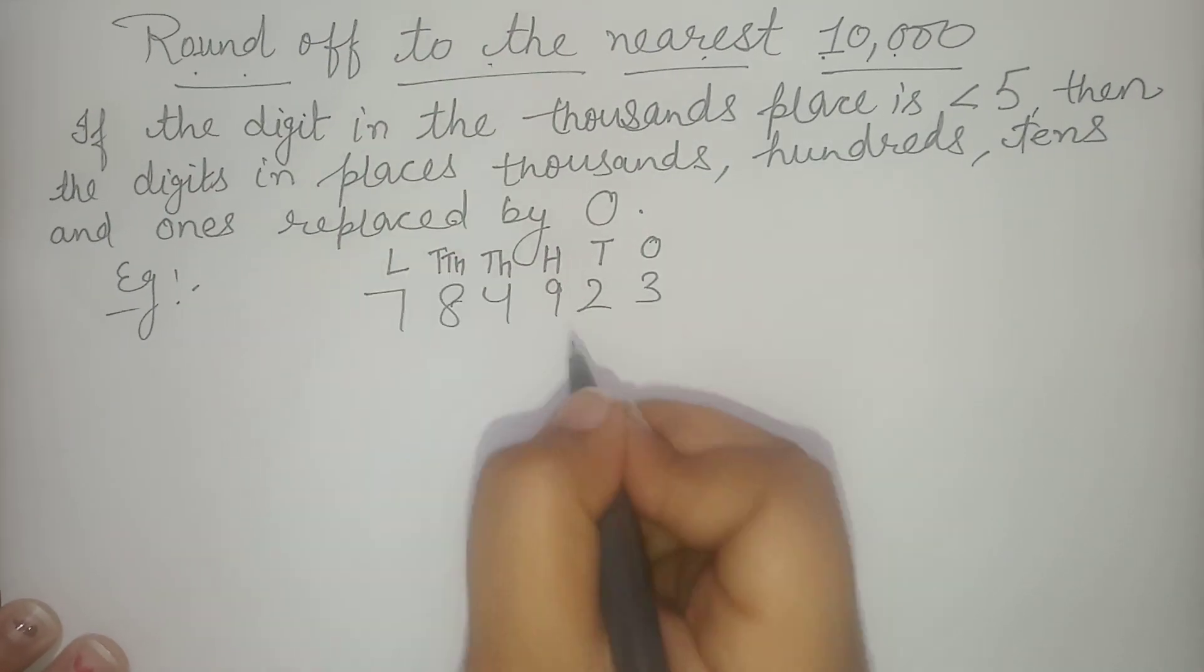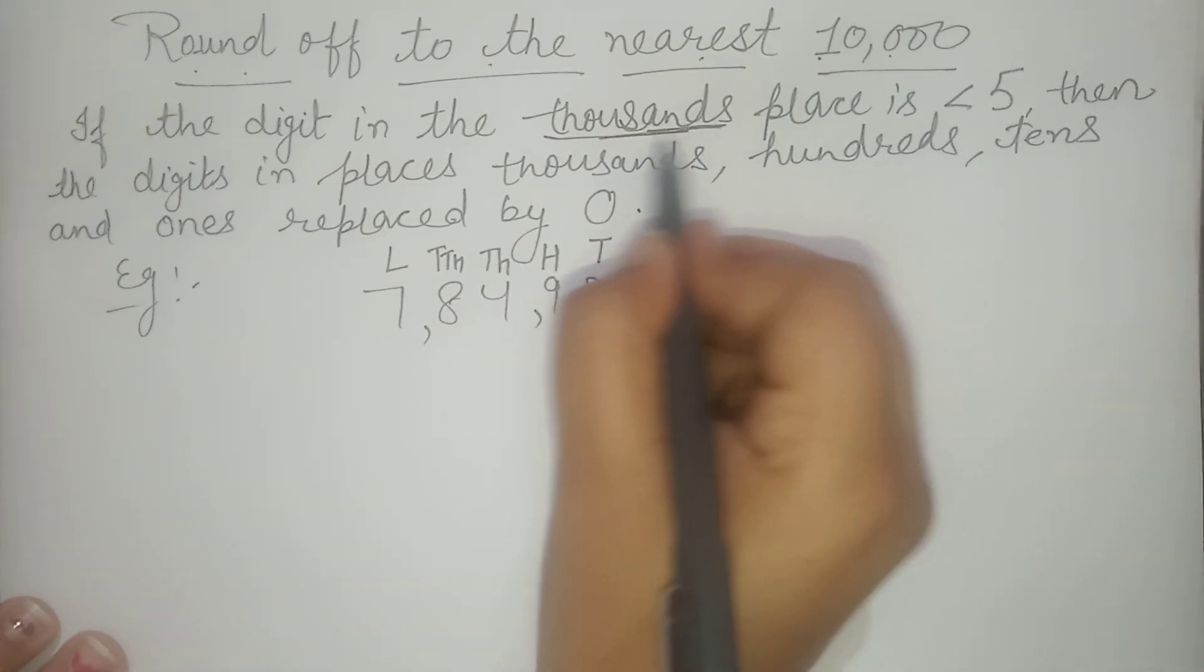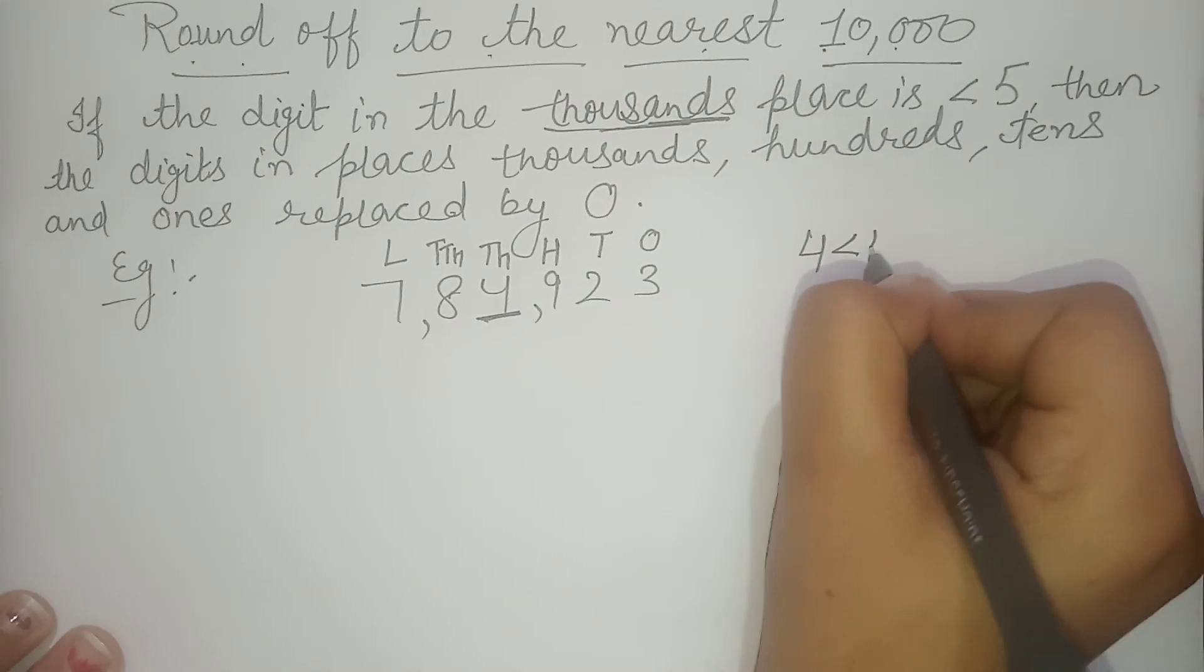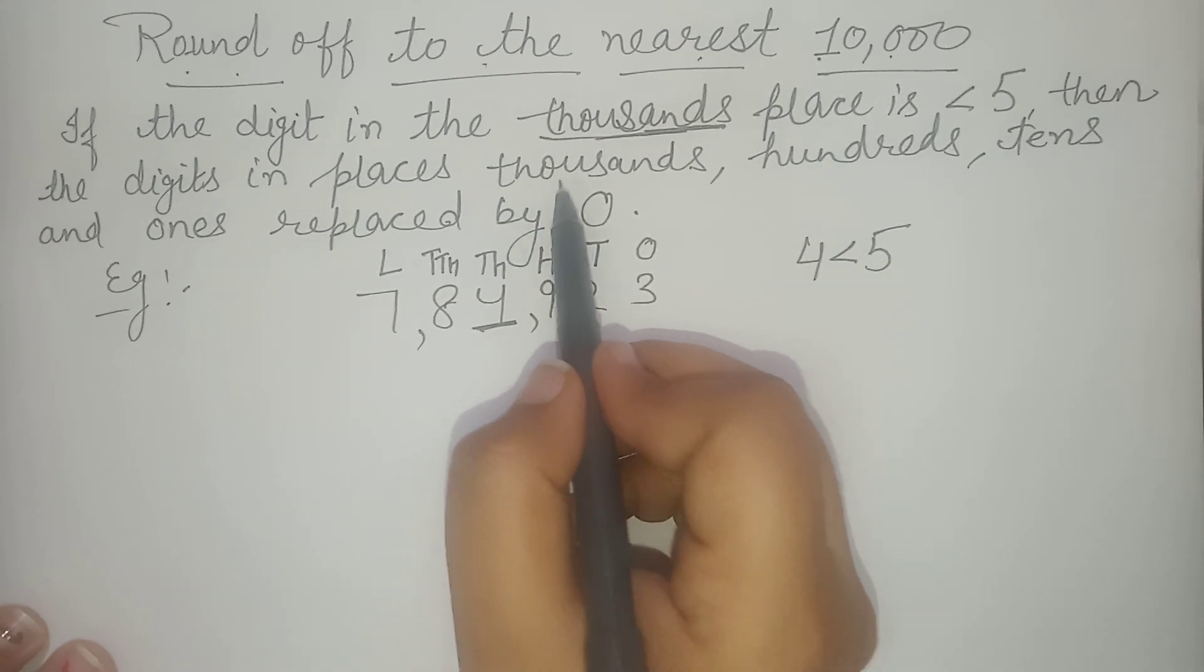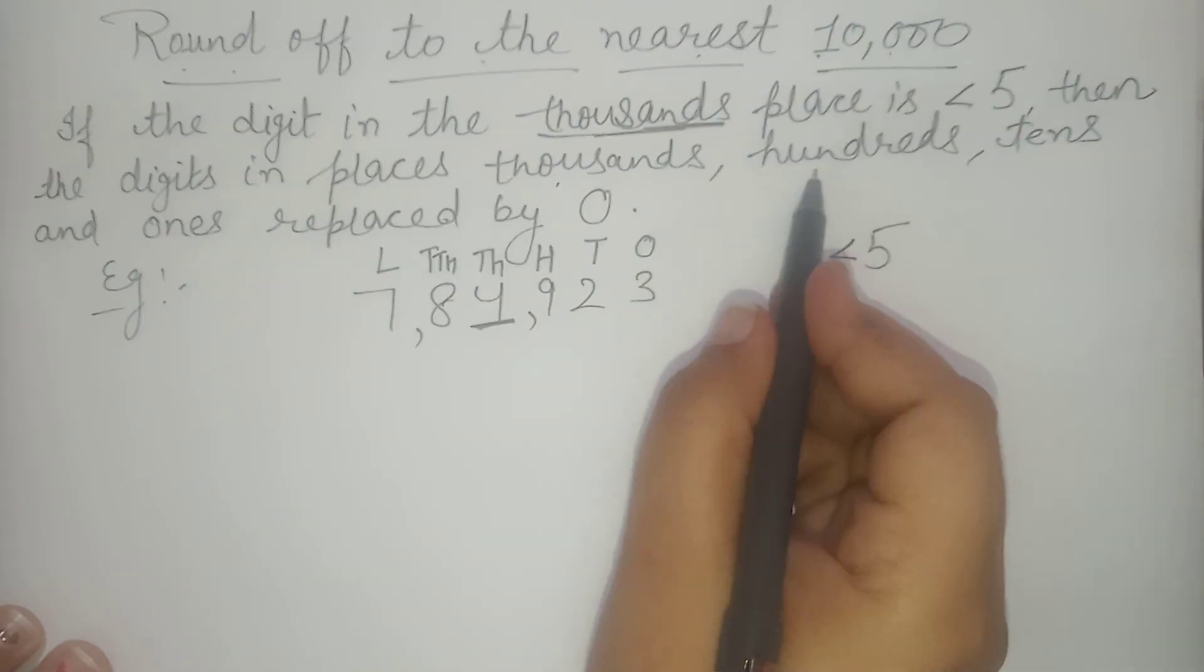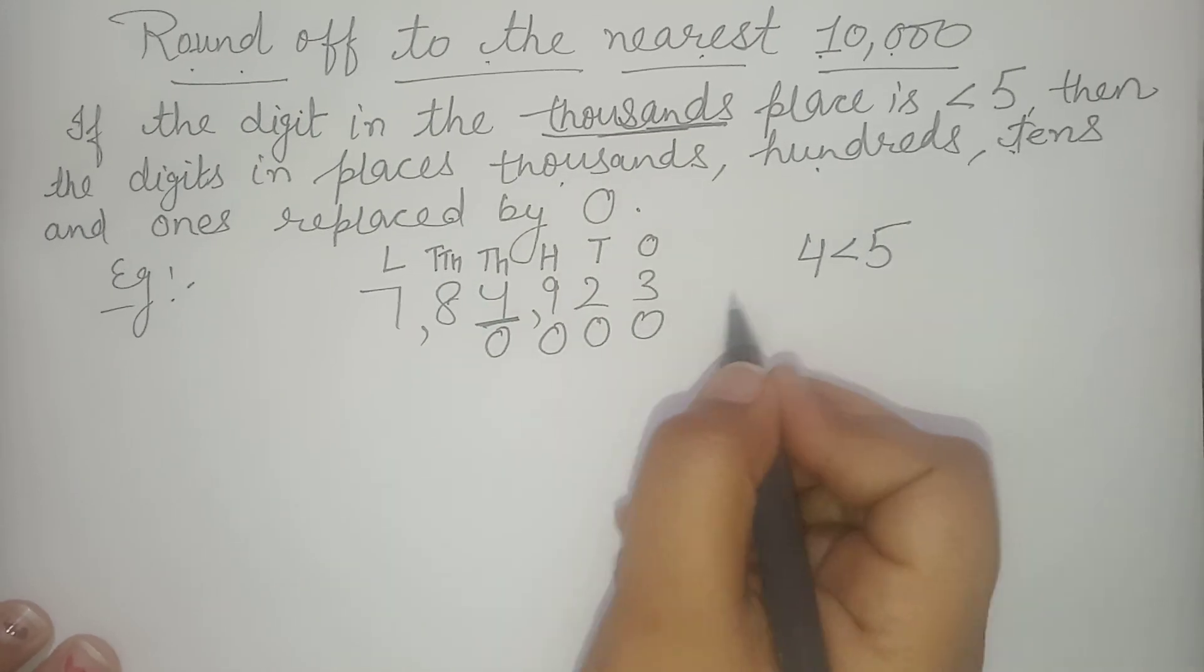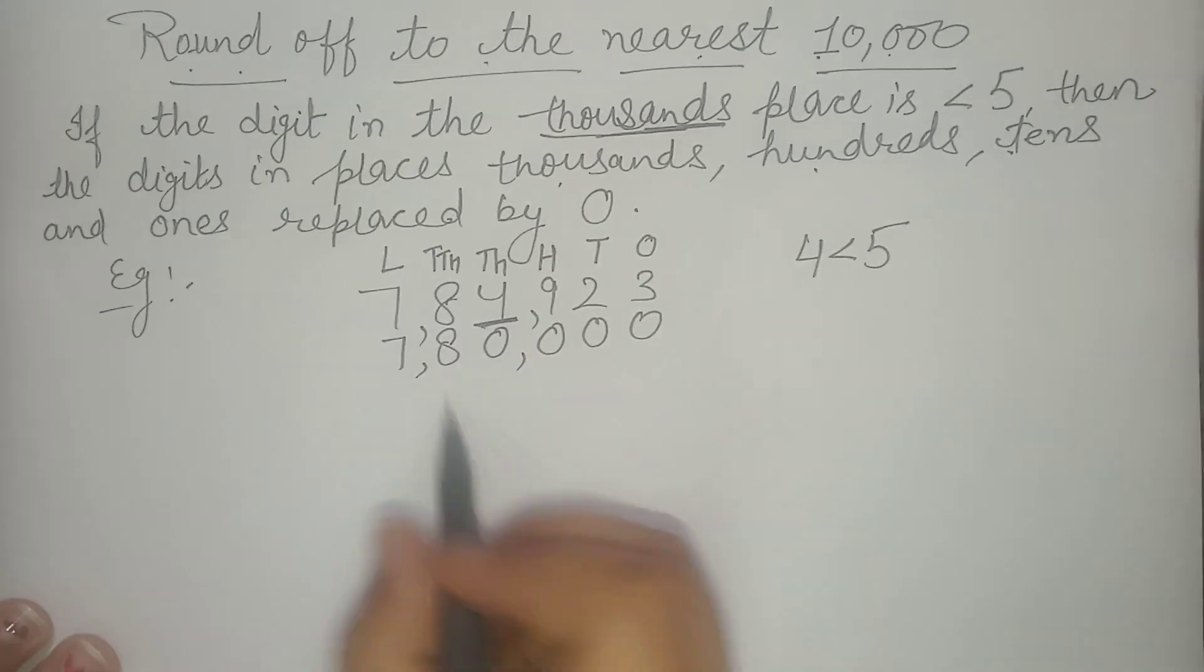Now which digit we have to check? Which place? Thousands. So here the digit is four. This is less than five, so what I have to do? The digits in the places thousands, hundreds, tens and ones will be replaced by 0 and the rest will remain same. So my number now is 7,80,000.